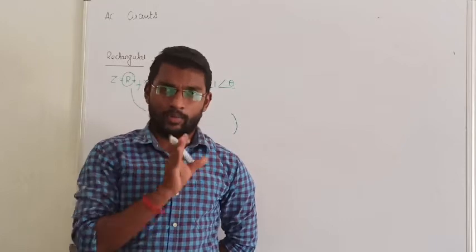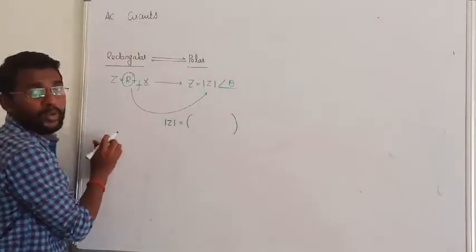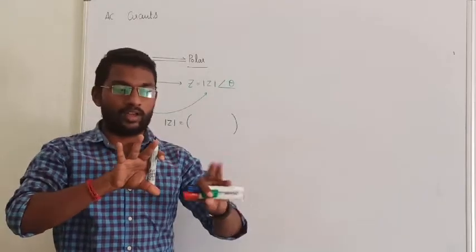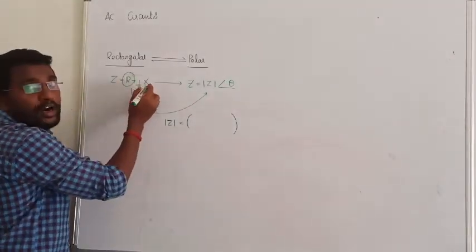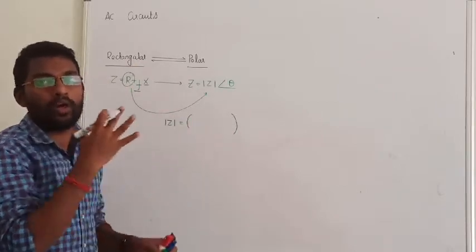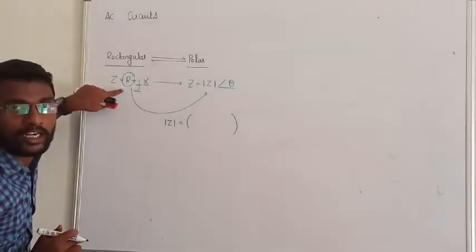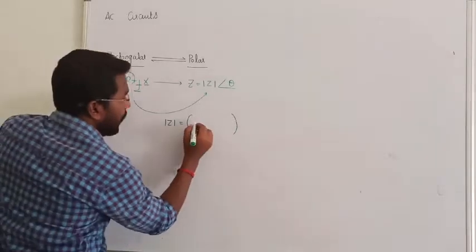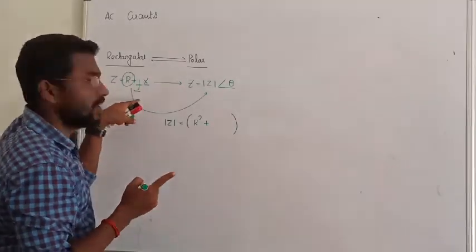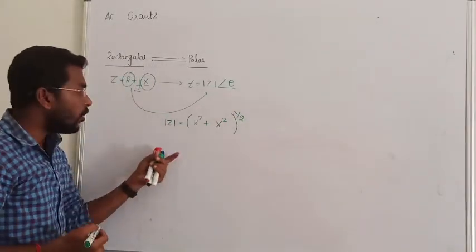Real part, imaginary part. The quantities that are existing with j are the imaginary part. j is not real part, that is why we find the magnitude. When finding the magnitude, real part and imaginary part you take. Don't touch j, just take the imaginary terms. Keep these two terms under root. That is how we are finding the magnitude.